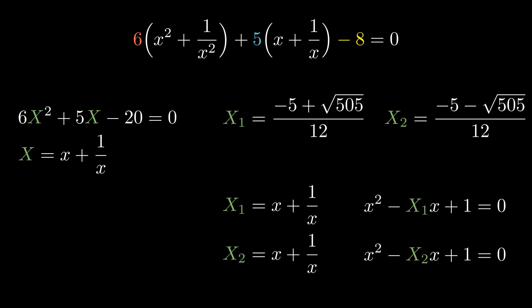Each of these two equations are actually quadratic themselves. Each has two solutions, which makes a total of 4 solutions. And that makes sense, since we're solving a 4th degree polynomial.